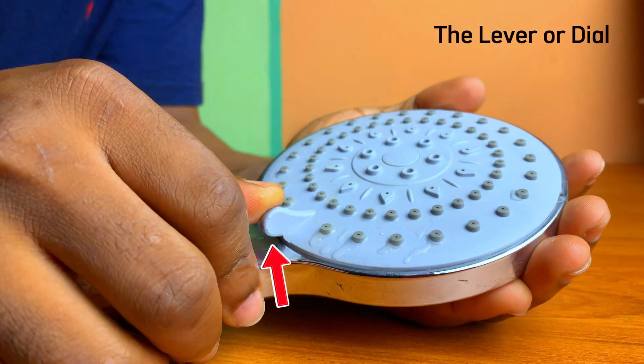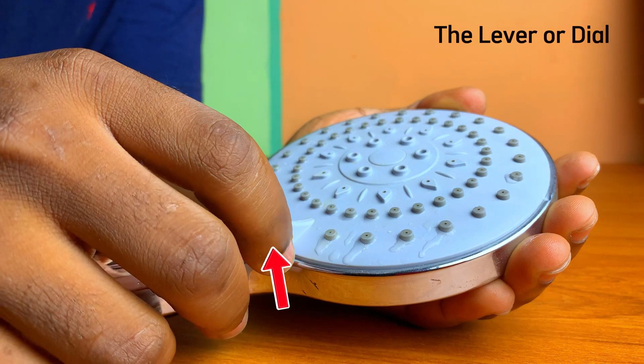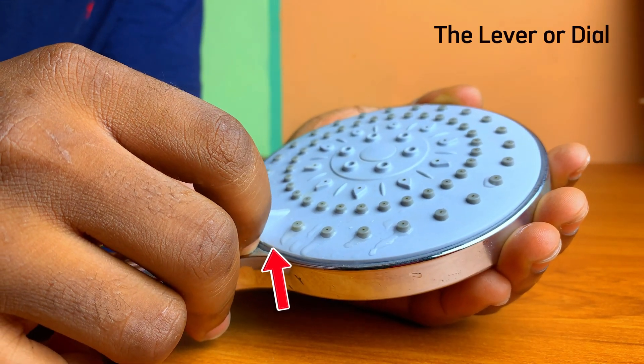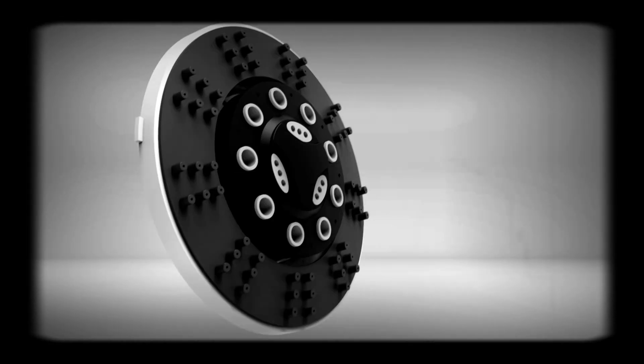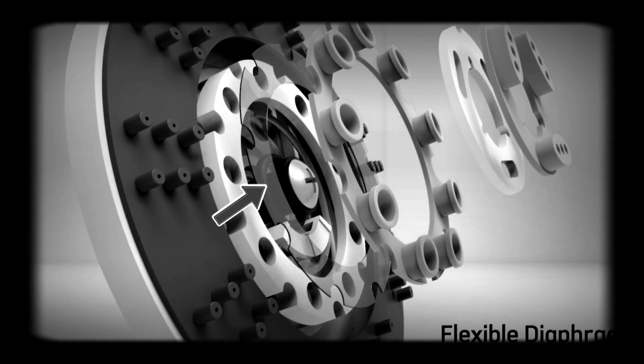Next, we have the lever or dial which is basically a user control. It's the external switch that you turn in order to change the spray mode. It's connected to the diverter plate which moves inside when rotated. Now that we know these different parts, how exactly does the shower head change your spray pattern?